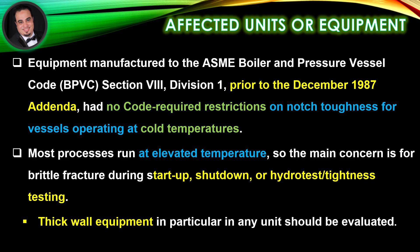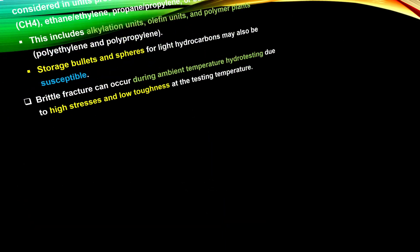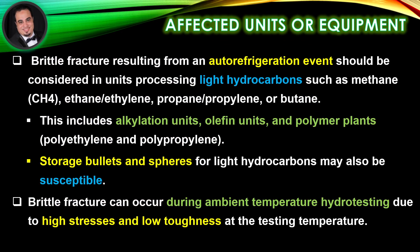Thick wall equipment in particular, in any unit, should be evaluated. Brittle fracture resulting from an auto-refrigeration event should be considered in units processing light hydrocarbons such as methane, ethane/ethylene, propane/propylene, or butane. This includes alkylation units, olefin units, and polymer plants — polyethylene and polypropylene. Storage bullets and spheres for light hydrocarbons may also be susceptible.